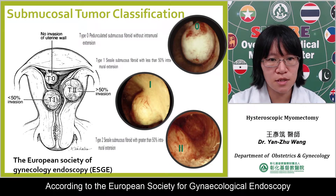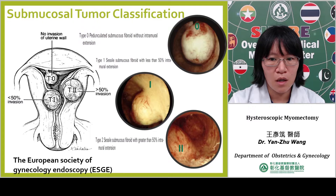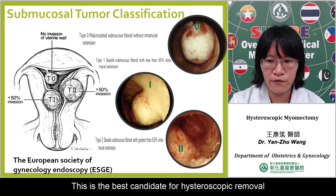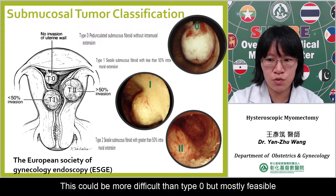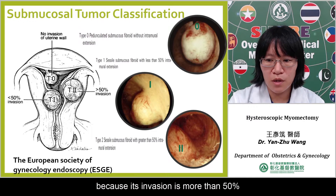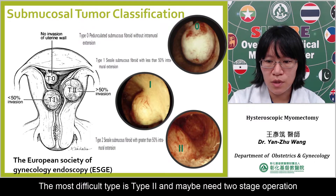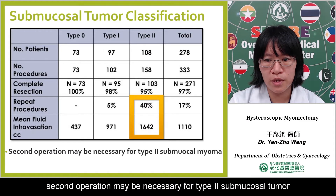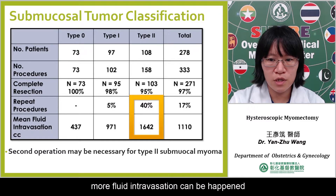According to the European Society of Gynecology Endoscopy, submucosal tumors can be classified as Type 0 — a pedunculated tumor without intramural extension, the best candidate for hysteroscopic removal. Type 1 is a fibroid with less than 50% intramural invasion, which could be more difficult than Type 0 but mostly feasible. Type 2 is the kind of tumor with the greatest challenge because its invasion is more than 50% and may need a two-stage operation. Due to the longer operation period, more fluid extravasation can happen.